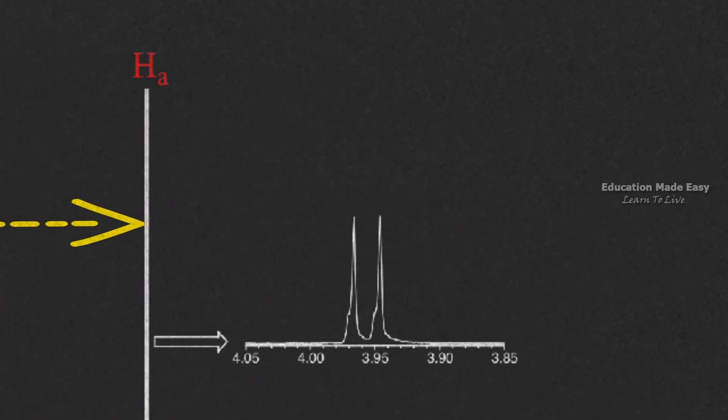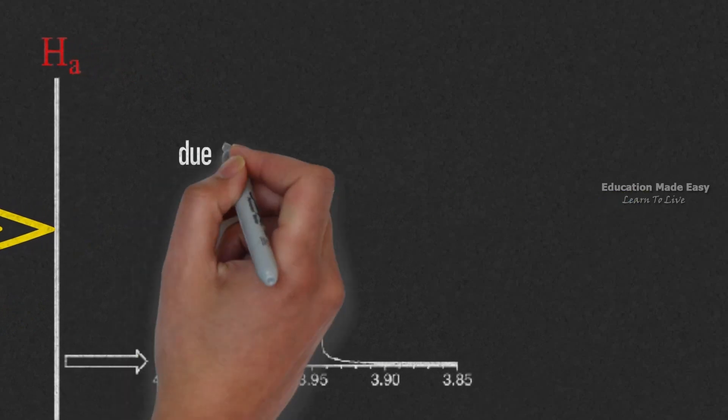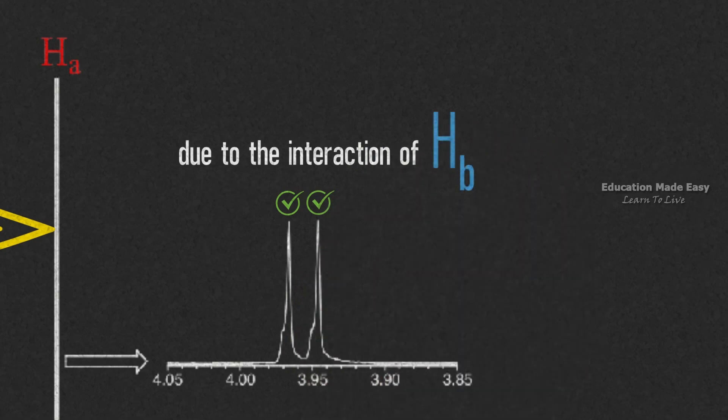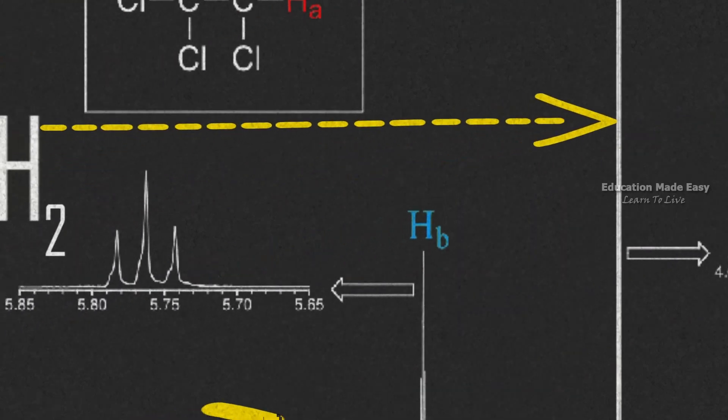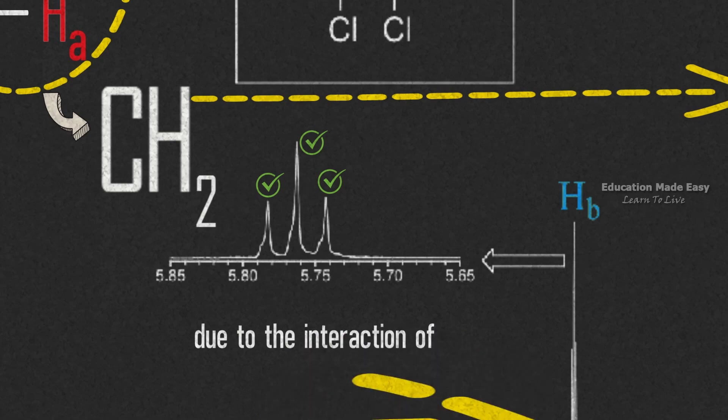The enlarged view of CH2 signal tells us that there are two peaks. It is due to the interaction of hydrogen atoms in the b group. From the enlarged view of CH proton signal, we can see that there are three peaks. It is due to the interaction of hydrogen atoms in a group, which are Ha's.